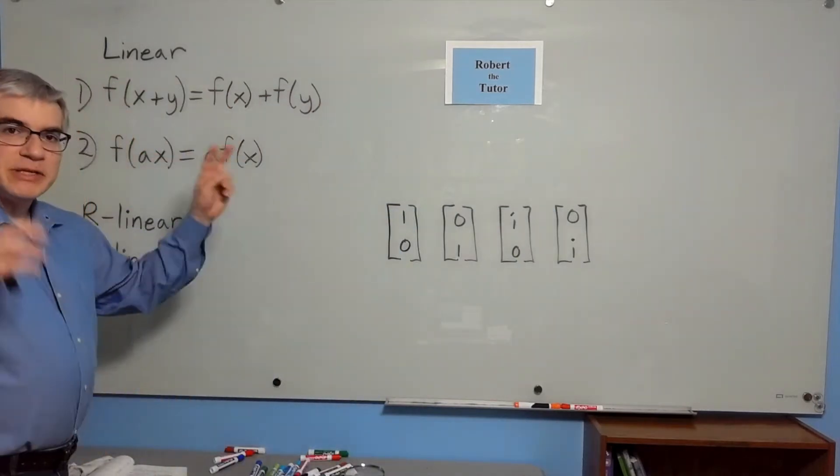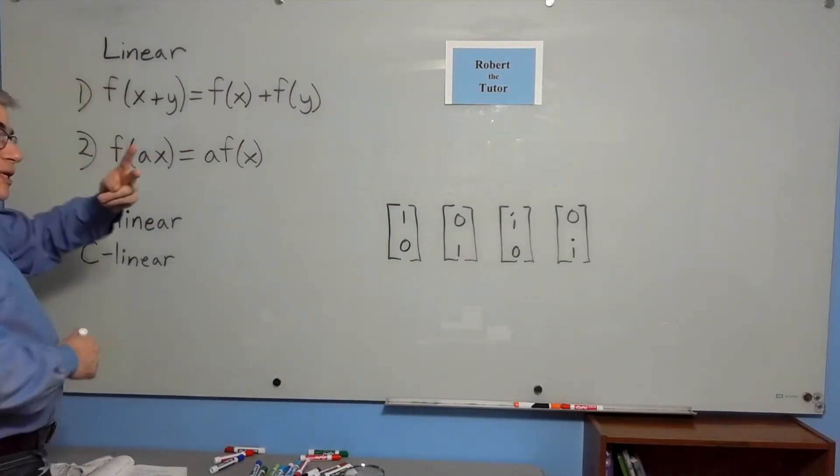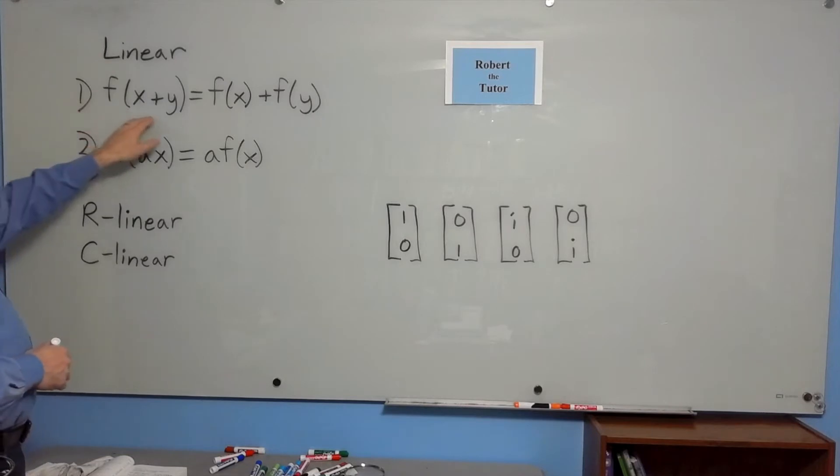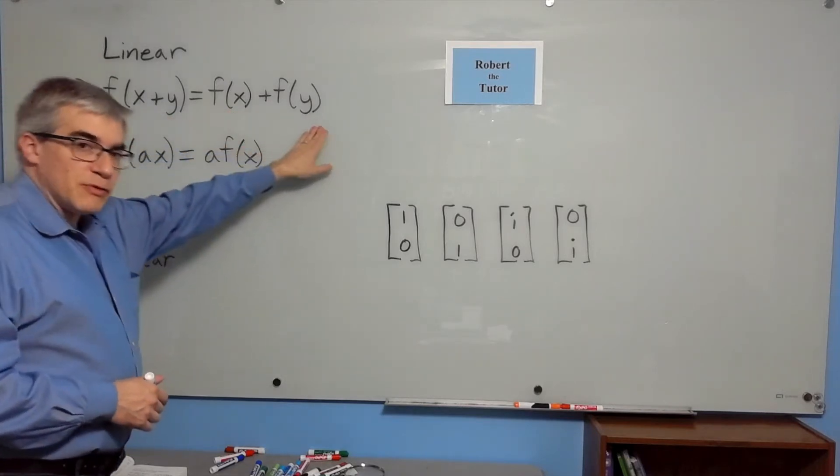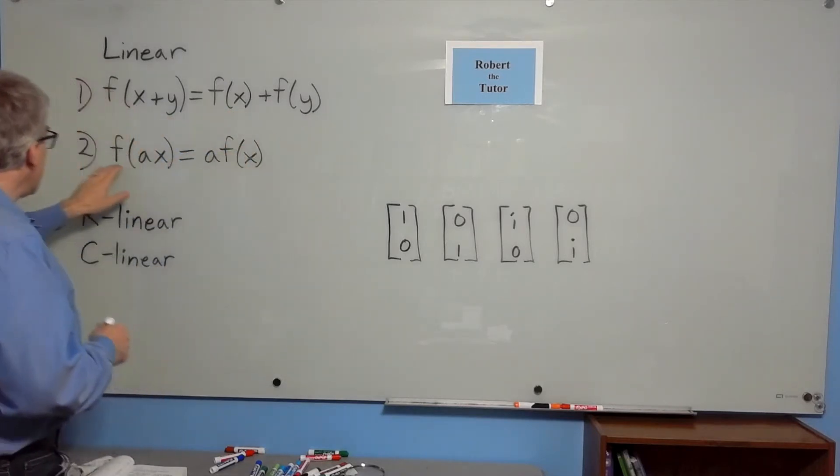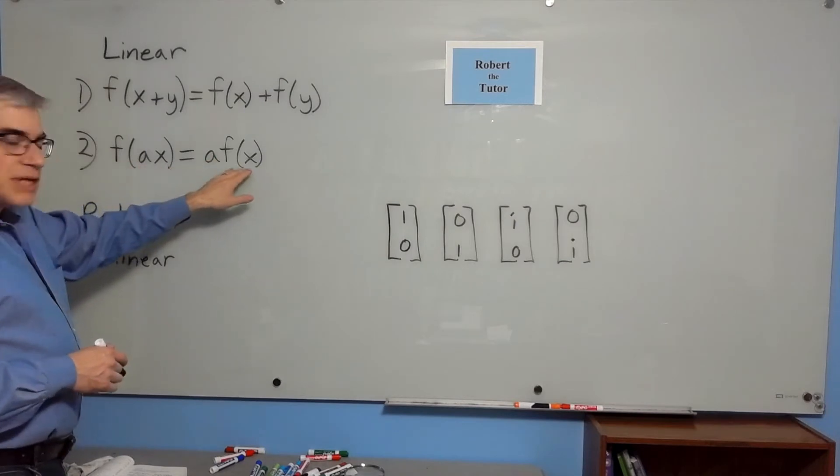In order for something to be linear in general, there are two conditions. f of x plus y equals f of x plus f of y, and f of ax equals af of x.